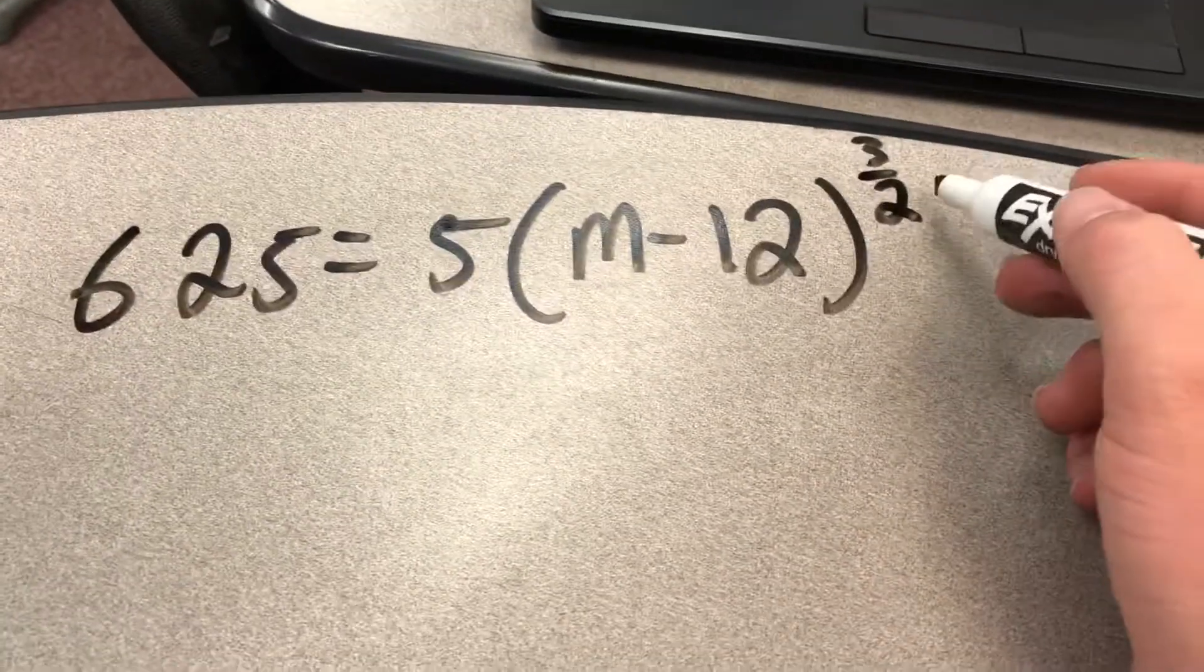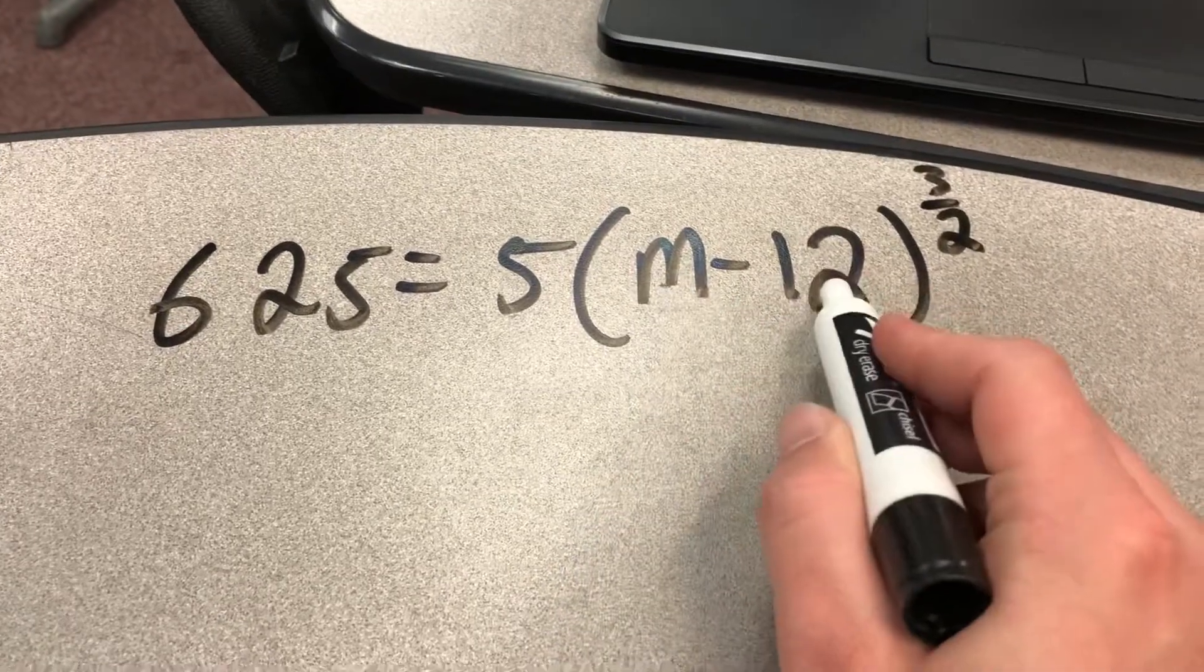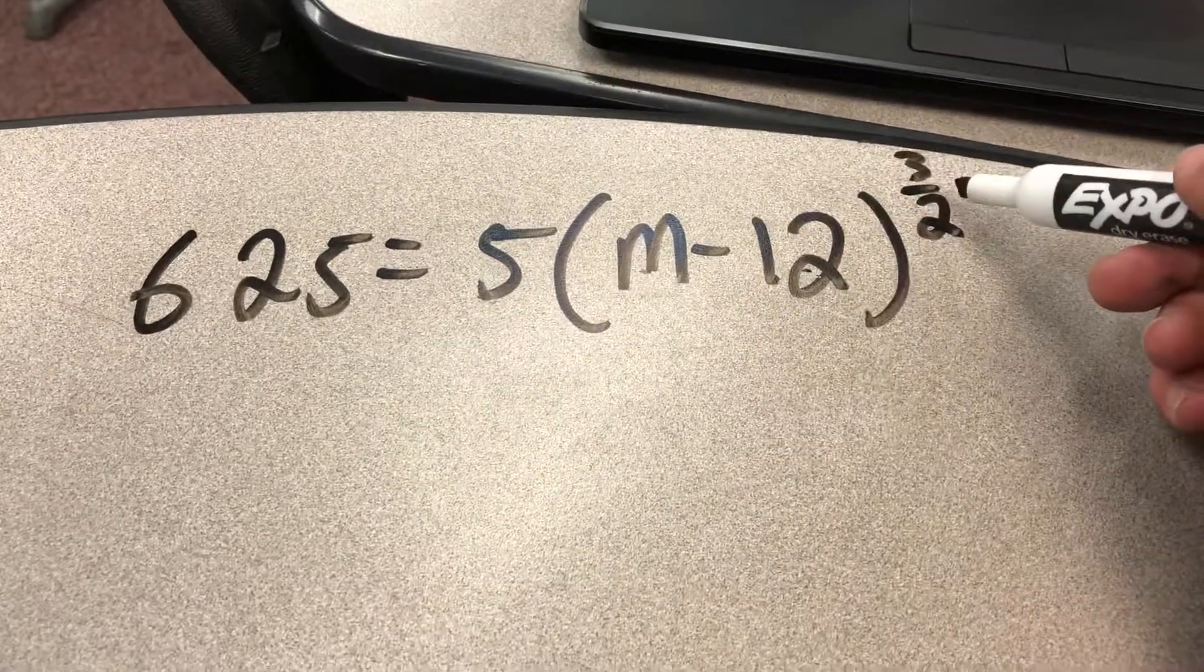Let's solve one more that has these fraction rational exponents. We're solving for m, so we're going to deal with this negative 12, we're going to deal with this 5, we're going to deal with this 3 halves.